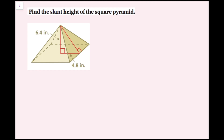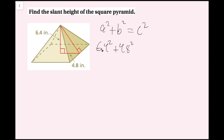For example three, we're going to find the slant height of the square pyramid. Notice that you can make a right triangle from the top of the pyramid to the base, and from the center of the base to the side — the slant length is the hypotenuse. I have 6.4 and 4.8 as my two legs, so I need to find the hypotenuse. I'll use the Pythagorean theorem: A squared plus B squared equals C squared, plugging in 6.4 for A and 4.8 for B.